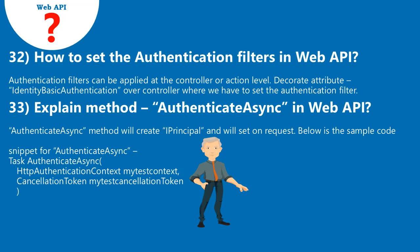Question 33: Explain the method AuthenticateAsync in Web API. The AuthenticateAsync method will create an IPrincipal and set it on the request. Below is the sample code snippet for AuthenticateAsync: Task AuthenticateAsync(HttpAuthenticationContext myTestContext, CancellationToken myTestCancellationToken).